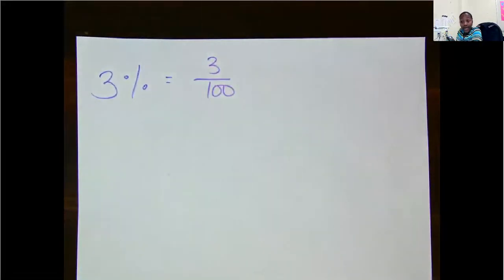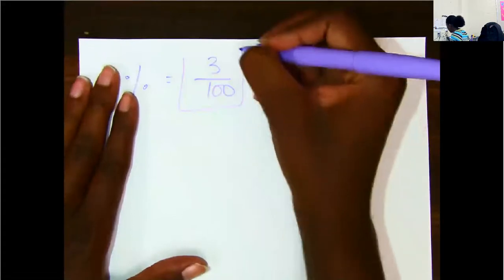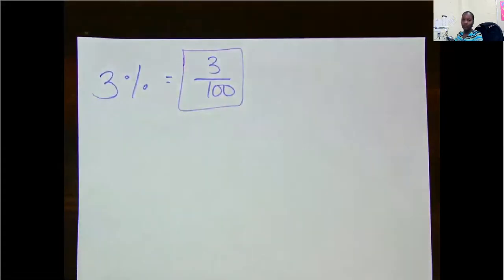Now, simplest form. Can I simplify this fraction? I have 3 out of 100. 3 and 100 do not share a common number, so it is in its simplest form. So 3 out of 100 will be my final answer.